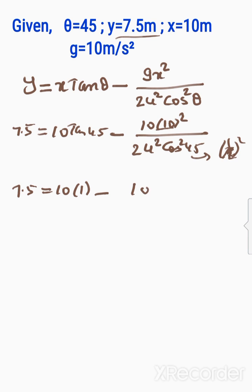Cos 45° is 1 by √2, squared is 1 by 2, the 2 cancels. So 7.5 equals 10 minus 1000 divided by u².